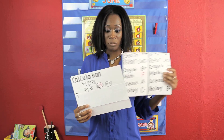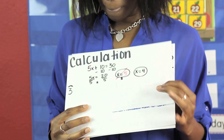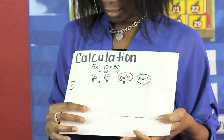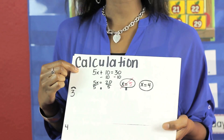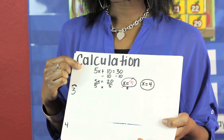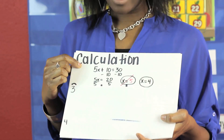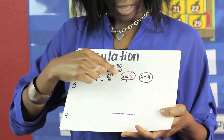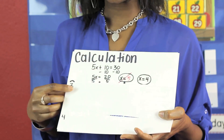My second common mistake is that students miscalculate. It's not that they don't understand the content, they just do their calculations incorrectly.